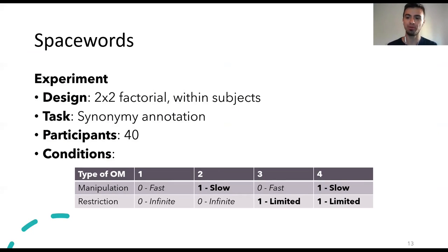We designed a two-by-two factorial within-subject experiment, and we had 40 participants. We administered four conditions, one for each variation of the two orthogonality scores, or for each combination of the two orthogonality scores. So we had a condition with fast and infinite bullets, a condition with slow infinite bullets, fast limited and slow limited.